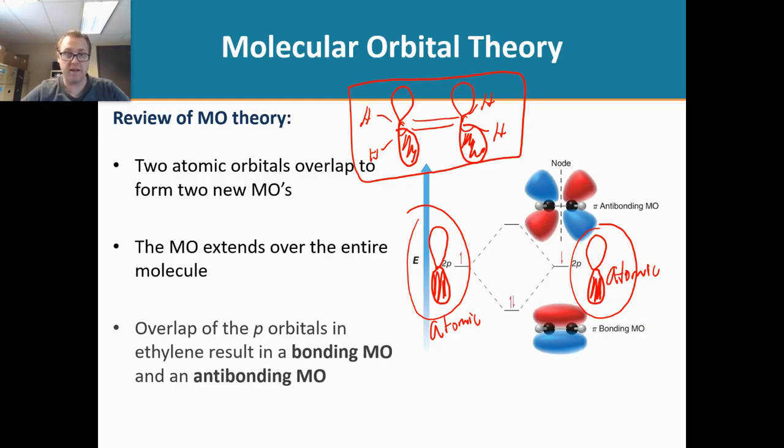That's one key difference. We also have the anti-bonding molecular orbital, and in the anti-bonding orbital, you can see that there is one node. So if there's a node between those two carbon atoms, no bonding, right? No electron density between those two carbons.